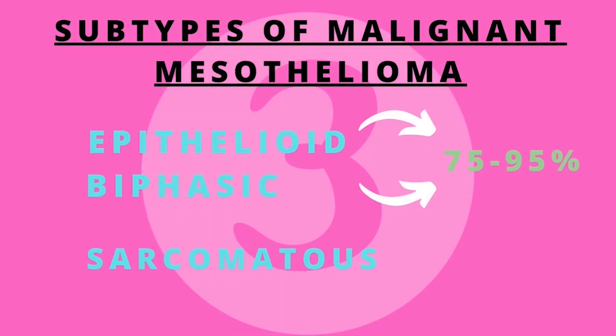Subtypes of malignant mesothelioma: there are three main histological subtypes. First is epithelioid, second is sarcomatous, and third is biphasic. Epithelioid and biphasic mesothelioma make up approximately 75–95% of mesothelioma cases and have been well characterized histologically, whereas sarcomatous mesothelioma has not been studied as much.